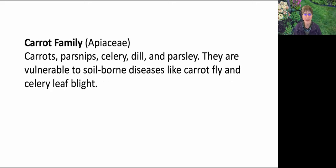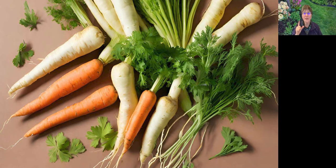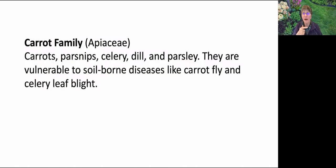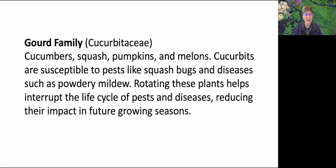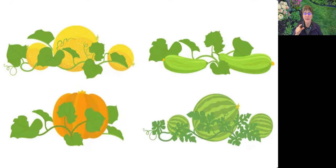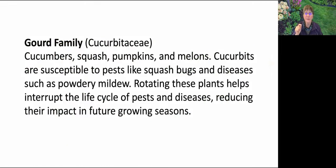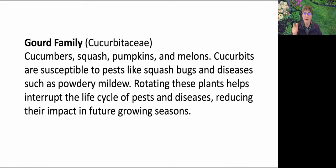The carrot family, Apiaceae, includes parsnips, celery, and dill. They are vulnerable to soil-borne diseases like carrot fly and celery leaf blight, so crop rotation is crucial for disrupting the habitat of these pests and limiting disease spread. The gourd family is a biggie too: cucumbers, squash, pumpkins, and melons are susceptible to pests like squash bugs and powdery mildew. Rotating these plants interrupts the life cycle of pests and diseases, and all members of the gourd family are considered heavy feeders that grow best in rich soil.